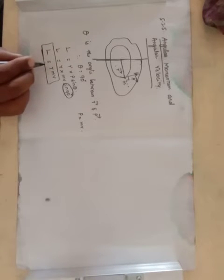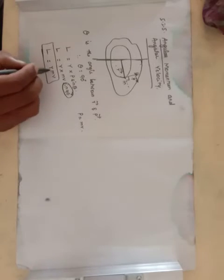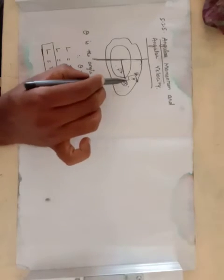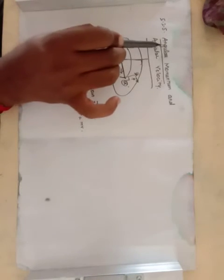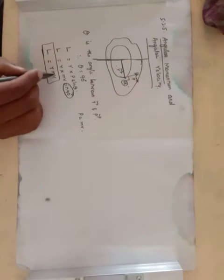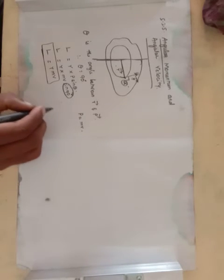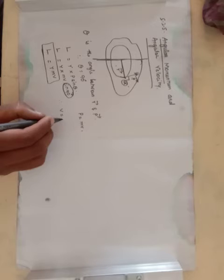The angular momentum L is equal to R into m into V, where R is the perpendicular distance, m is the mass of the point mass, and V is the linear velocity of the point mass. Now we will use the relationship between linear velocity and angular velocity.